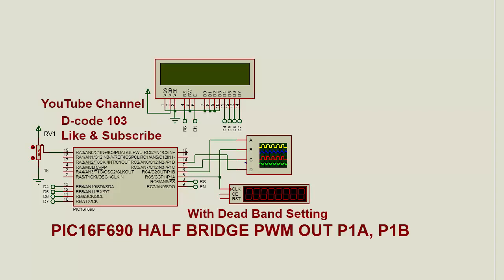Welcome to my channel decode103 on YouTube. Today I will show you how to generate half-bridge PWM output in PIC microcontroller PIC16F690 with deadband setting. This is the inbuilt facility in PIC16F690 to set deadband.